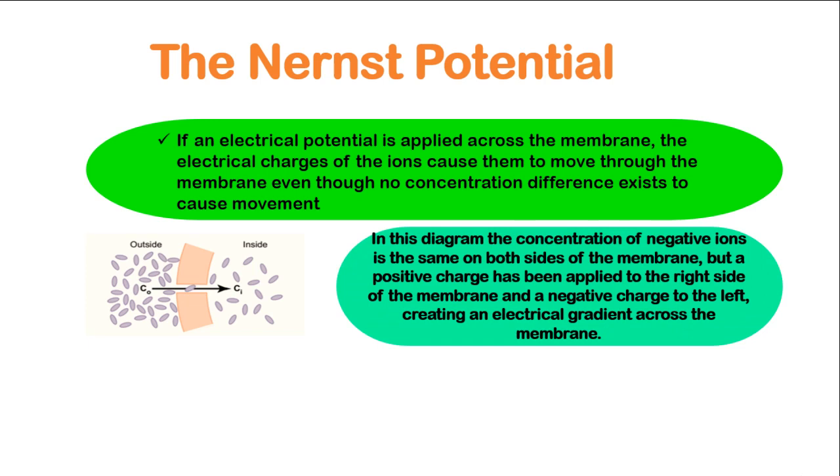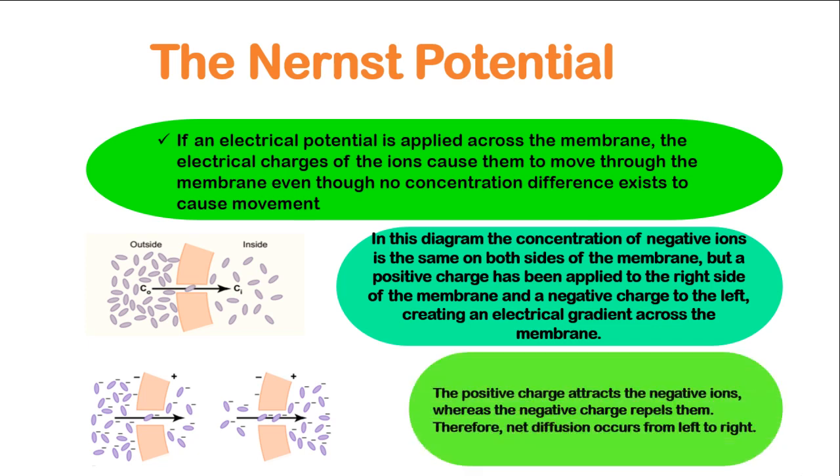In this diagram, the concentration of negative ions is the same on both sides of the membrane, but a positive charge has been applied to the right side of the membrane and a negative charge to the left. This creates an electrical gradient across the membrane.